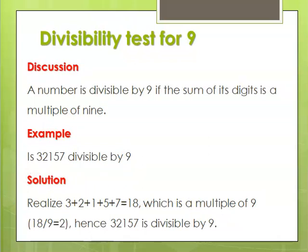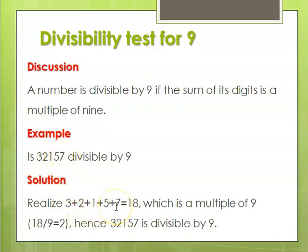A number is divisible by 9 if the sum of its digits is a multiple of 9. For example, given the number 32,157, we sum the digits: 3 plus 2 plus 1 plus 5 plus 7, which gives a total of 18. Now, 18 is a multiple of 9 — 9 goes into 18 two times. Therefore, 32,157 is divisible by 9. So, sum the digits and check if the result is a multiple of 9; if it is, the number is divisible by 9.